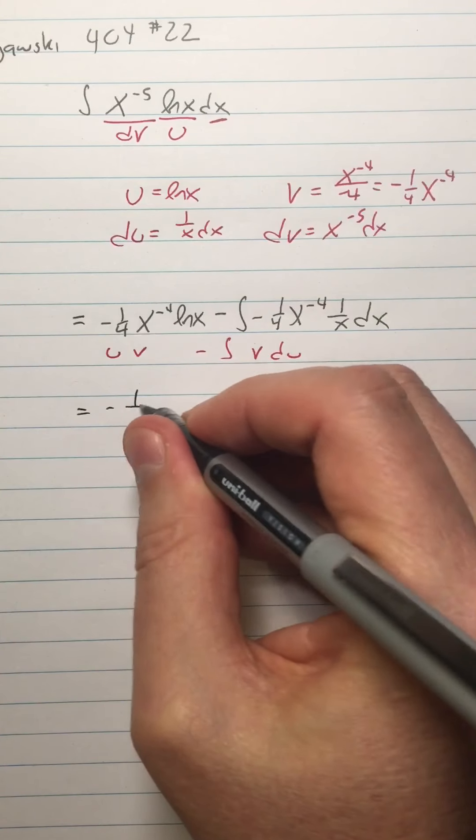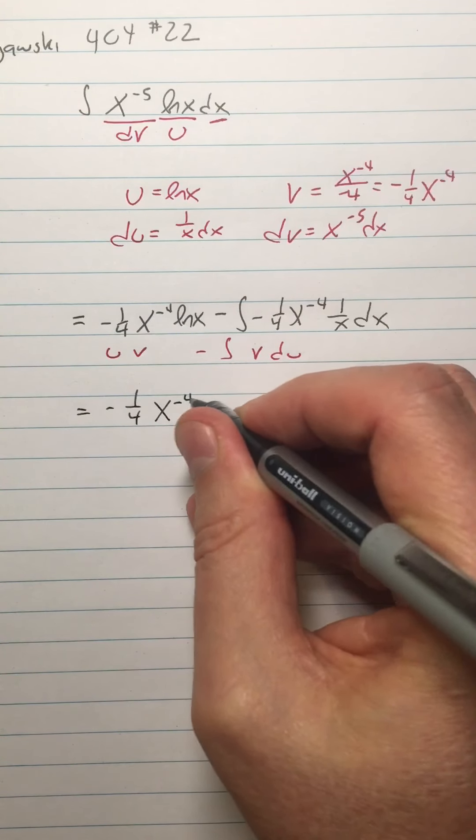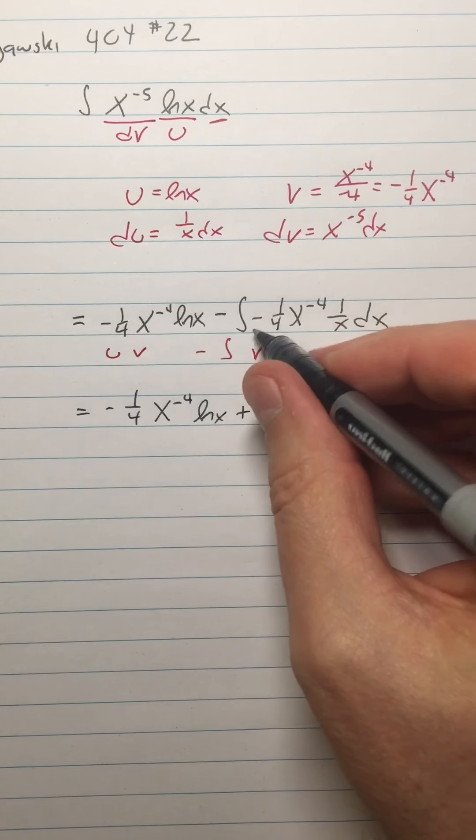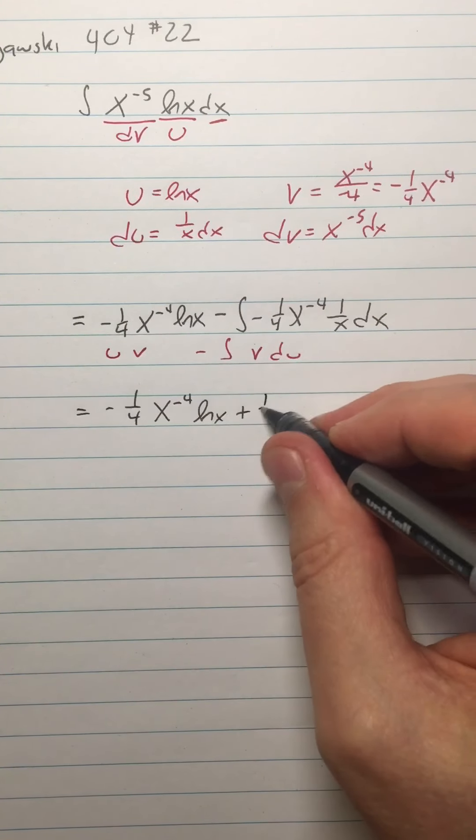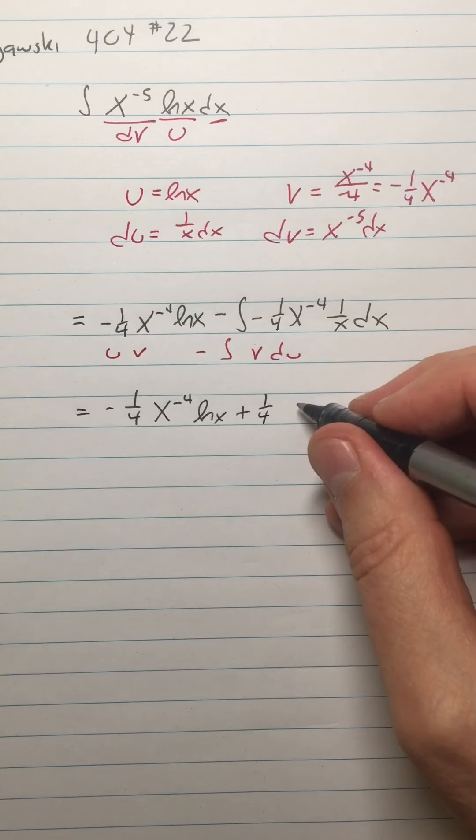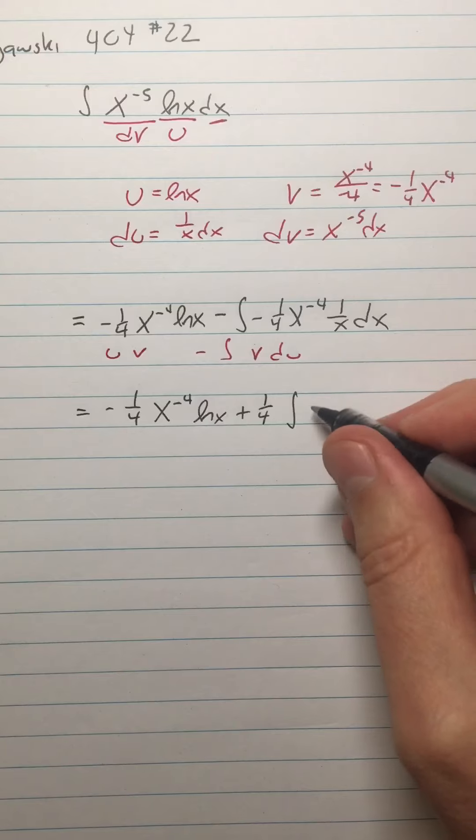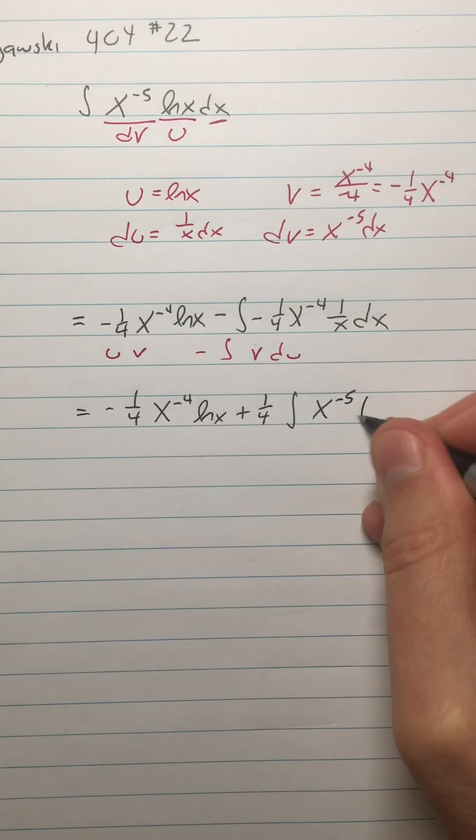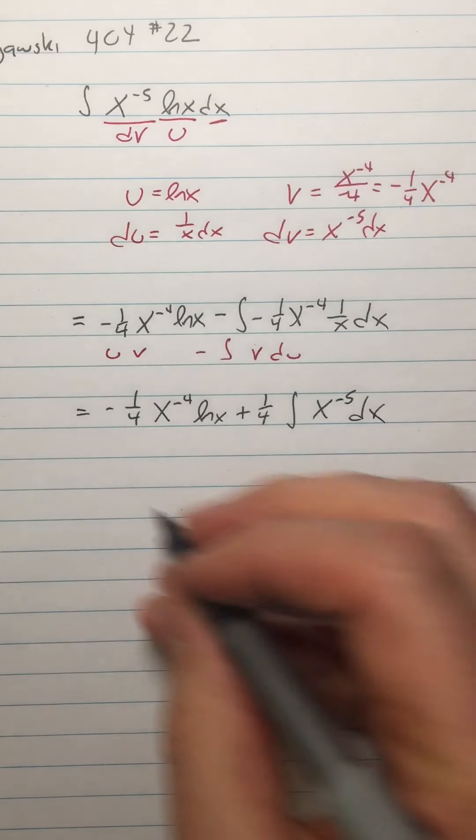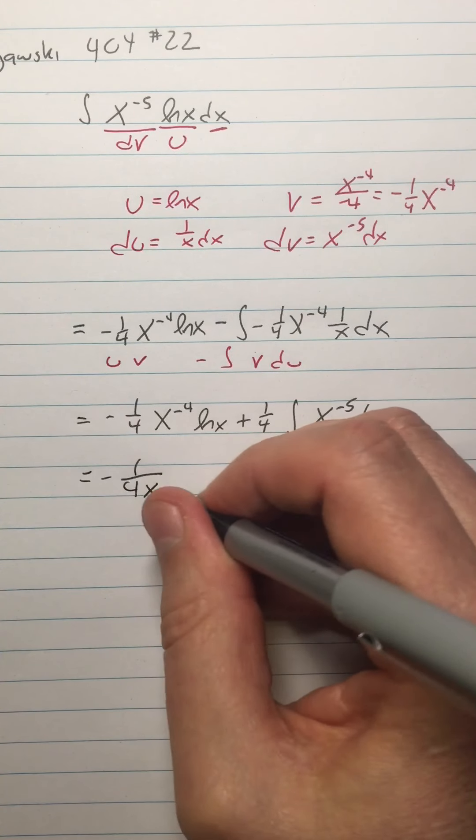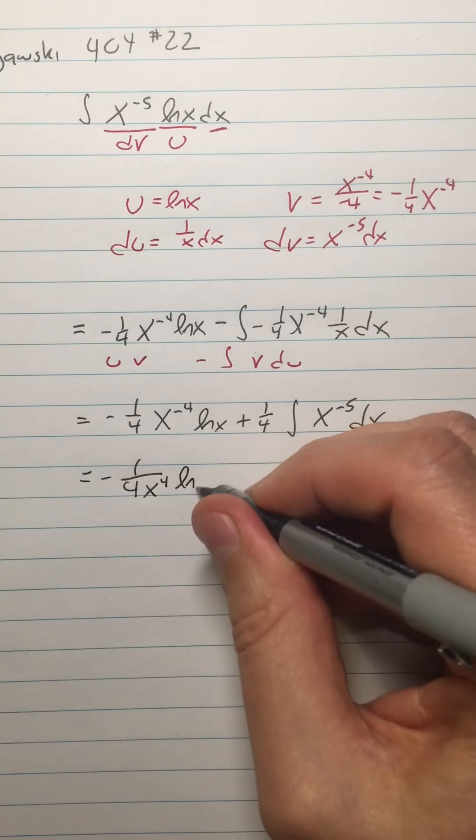All right, looks a little crazy, but we can simplify that quite a lot. So now I have negative one fourth x to the negative fourth ln x. We can make this a plus, bring out that minus sign. We can also bring out the one fourth, might make our world easier a little bit. And then integral of, so I have x to the negative fourth times one over x. That should be pretty clearly that that's x to the negative fifth dx.